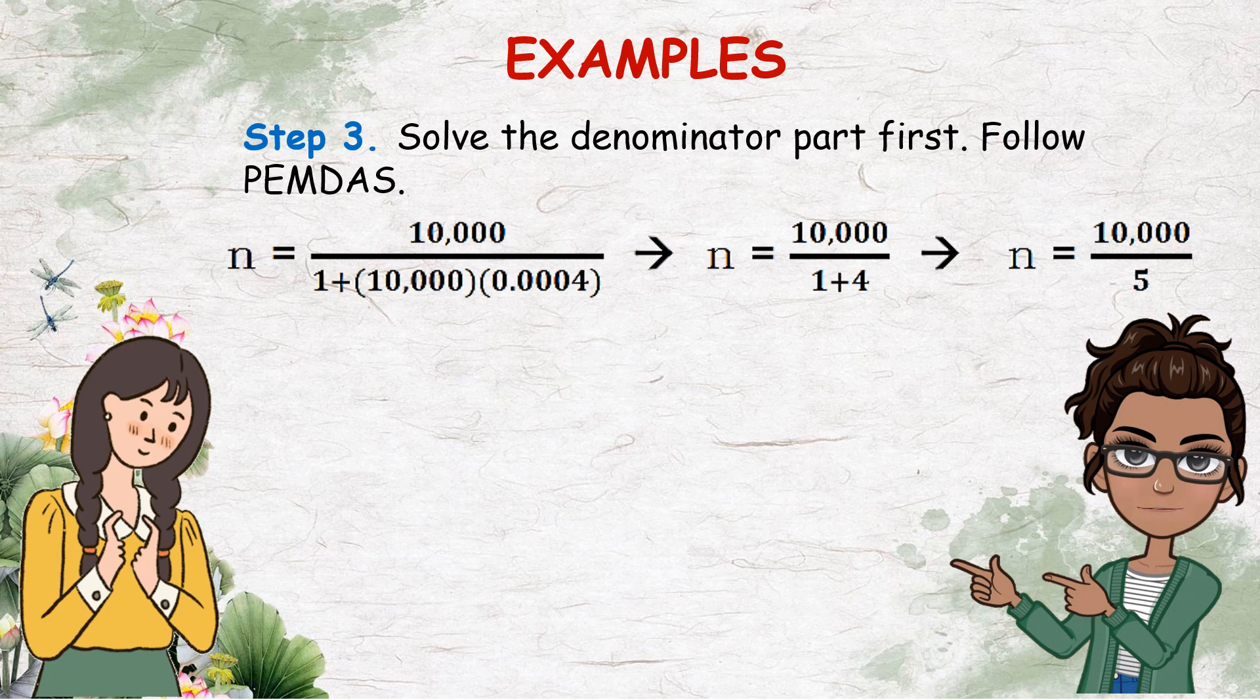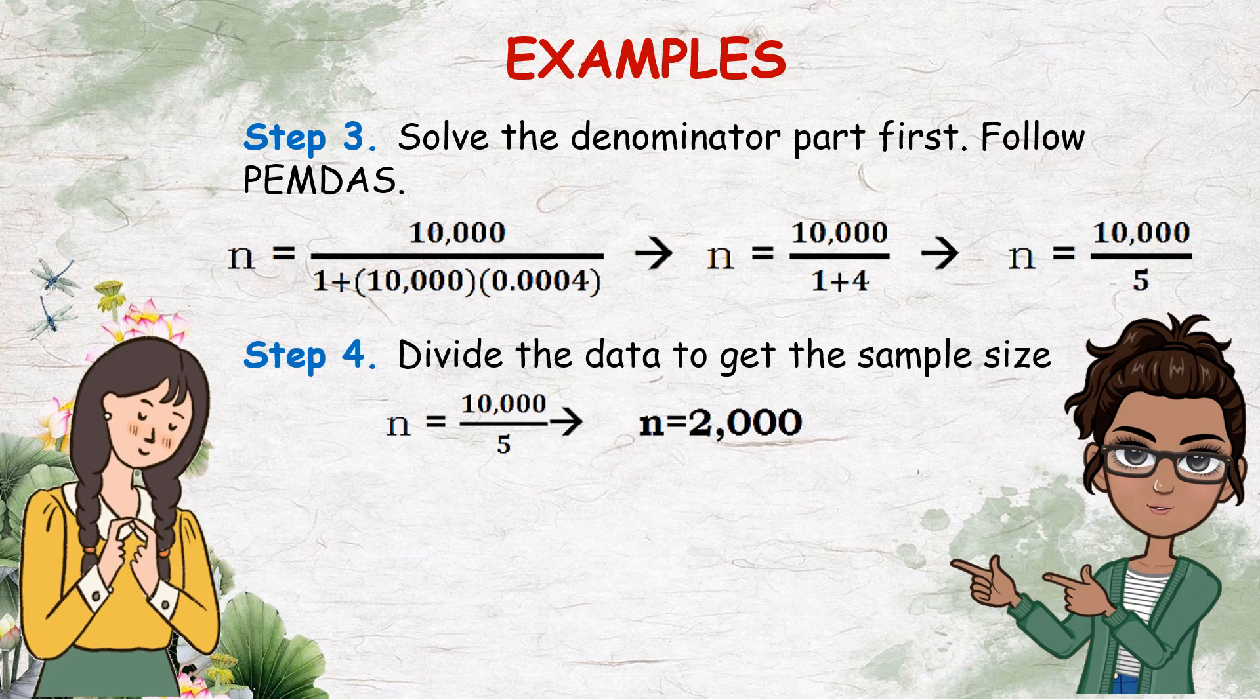Step 3, solve the denominator part first, then follow PEMDAS. N equals 10,000 divided by 1 plus 10,000 times 0.0004. N equals 10,000 divided by 1 plus 4, will yield n equals 10,000 divided by 5. Step 4, divide the data to get the sample size, or n equals 10,000 divided by 5, and n equals 2,000.